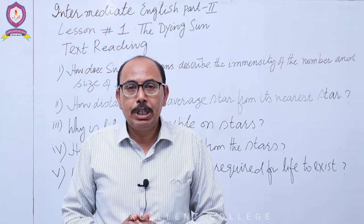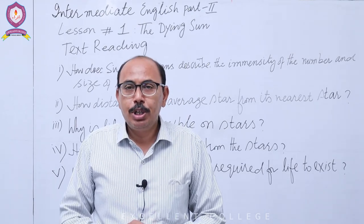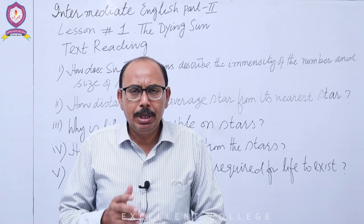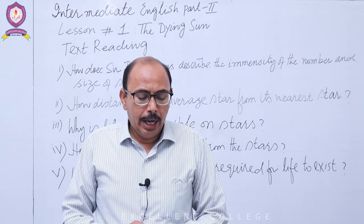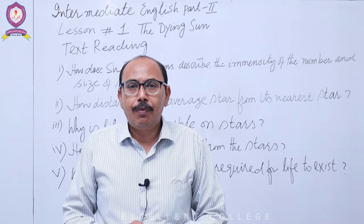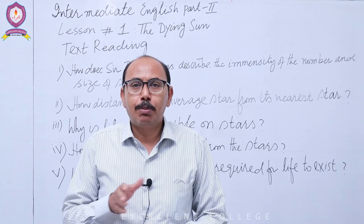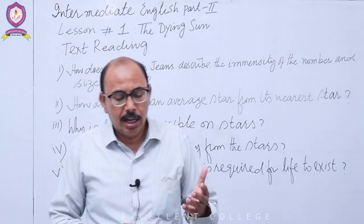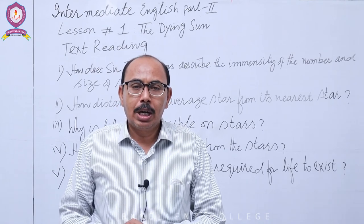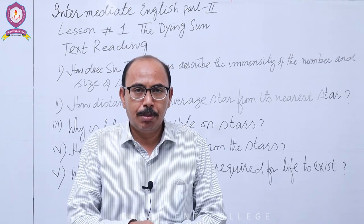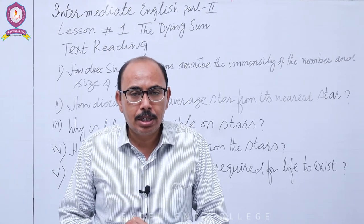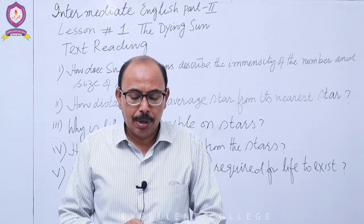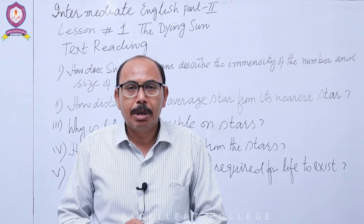Absolute zero کا مطلب Sir Jeans نے خود بتایا ہے — اس کا Celsius میں equivalent بہت نیچے ہے۔ تو نتیجہ یہ نکلتا ہے: نہ ستاروں پر زندگی ہو سکتی ہے کیونکہ temperature بہت زیادہ ہے، نہ ستاروں سے دور کہیں زندگی exist کر سکتی ہے کیونکہ درجہ حرارت بہت کم ہے۔ تو پھر زندگی کہاں ہو سکتی ہے — یہ ہم اگلے paragraph میں پڑھ رہے ہیں۔